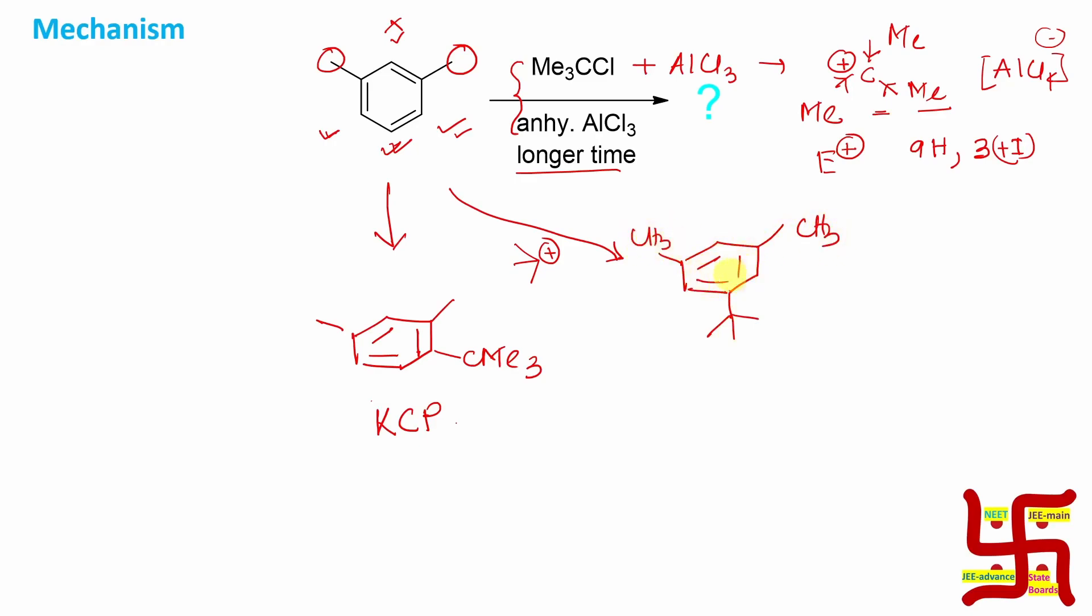Actually, if you look at it from the steric point of view: here, the tertiary butyl group is closer to this methyl group, so there is a significant amount of steric repulsion. But however, right now this tertiary butyl group is meta with respect to this as well as this, so it has minimum steric repulsion.